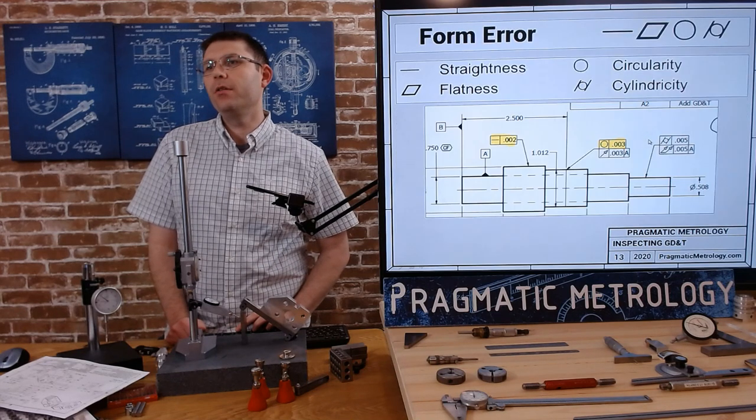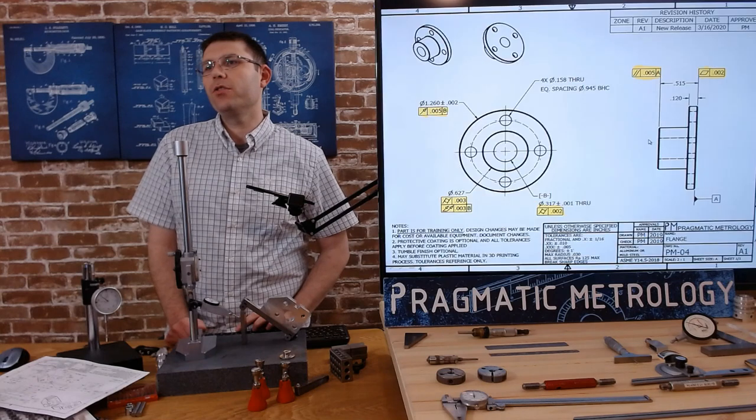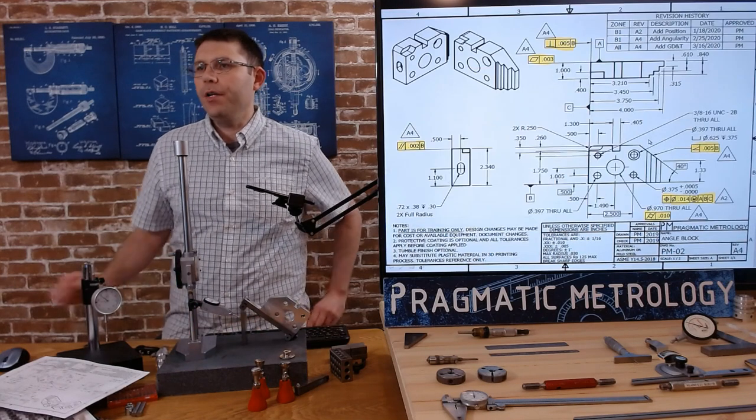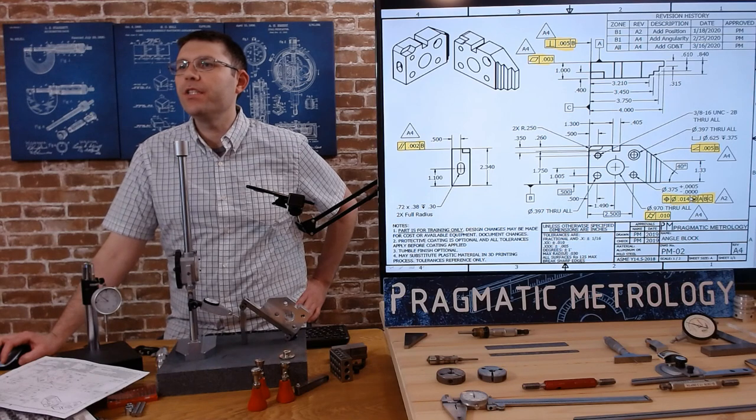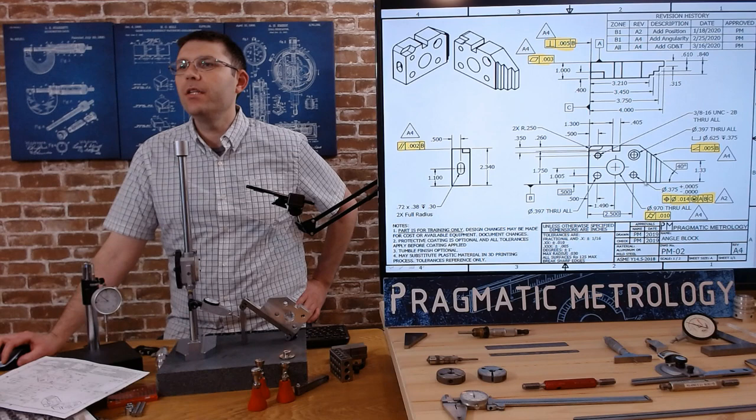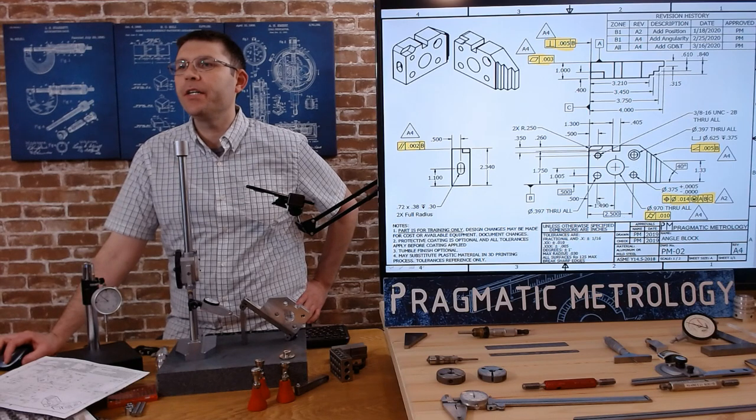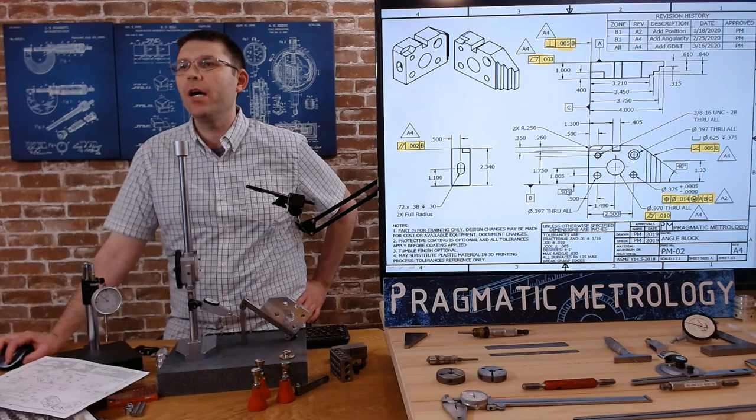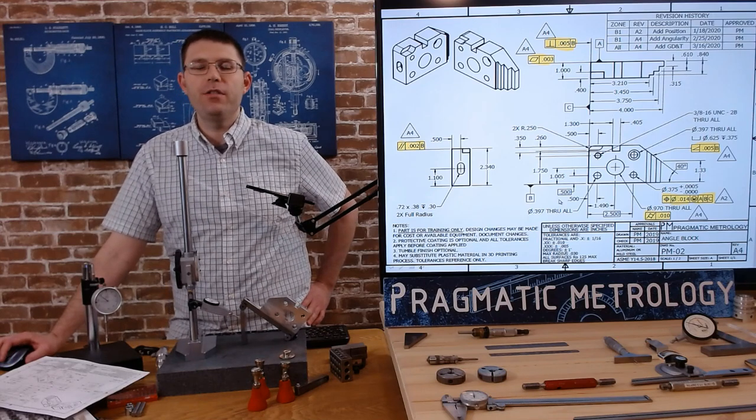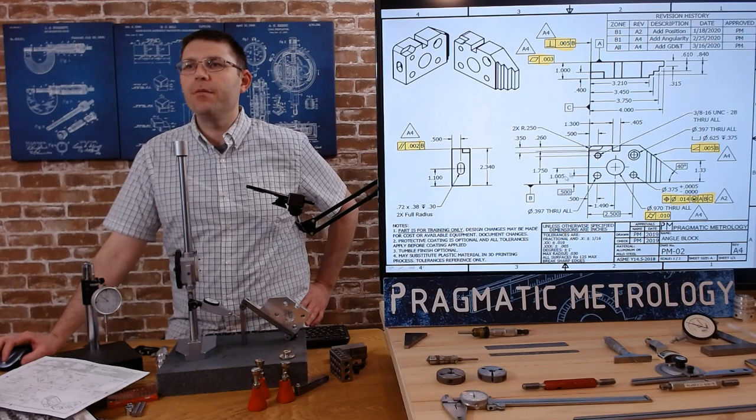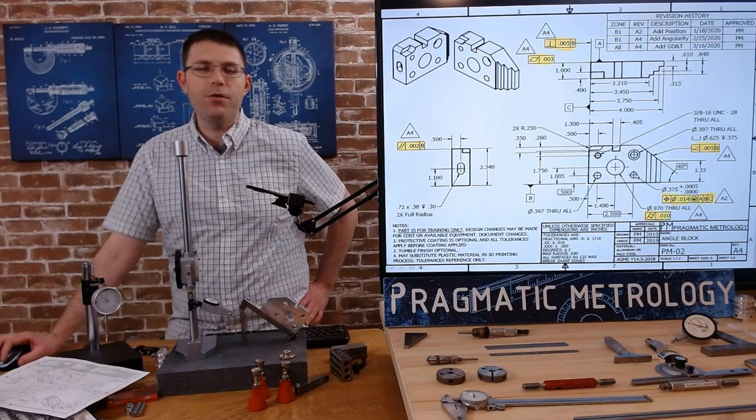Continuing on that discussion by the box, it also applies to the true position requirement. So let's find our print that has true position on it. Right here we have a true position 14 with datums involved, and this hole here is positioned by this 2.5 in X and this 0.5 in Y. They also have a box, and it's the same as I just mentioned - it's a visual indicator that these dimensions are controlled by a feature control frame.